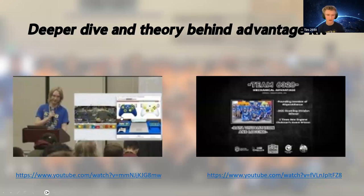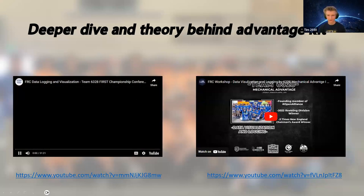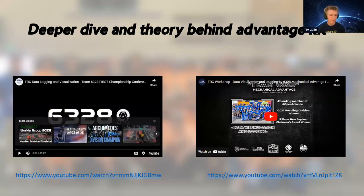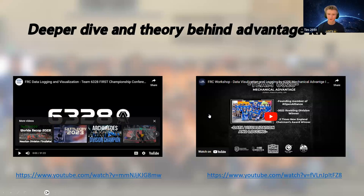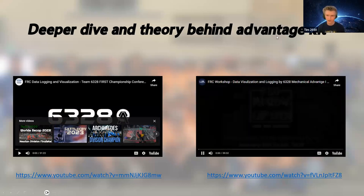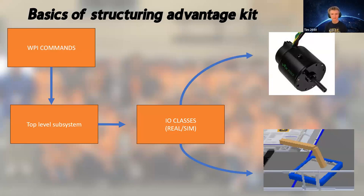There are a couple of videos we're not going to play in this presentation because they're pretty long, but we're definitely going to send a link to this presentation and you can check them out — there are also links at the end. One was from a workshop at Worlds where someone from Mechanical Advantage talked about how useful AdvantageScope is, and the other is another workshop. Definitely check those out. So this is the basic structure of AdvantageKit — of course it's a bit more complicated than this, but I'll try to explain it.